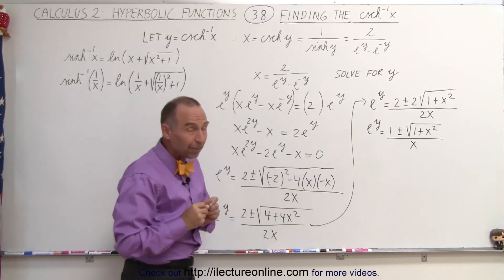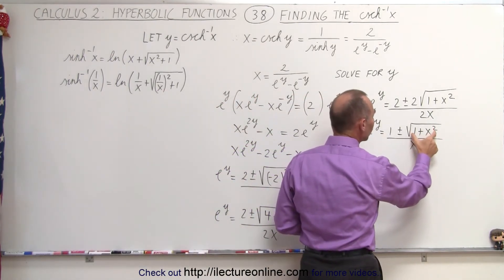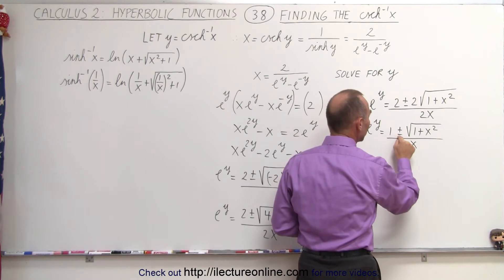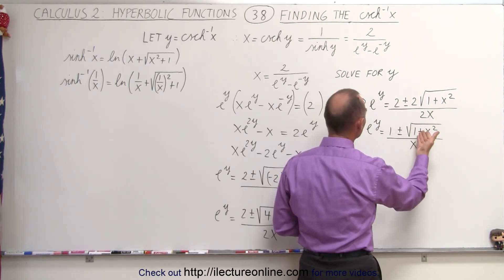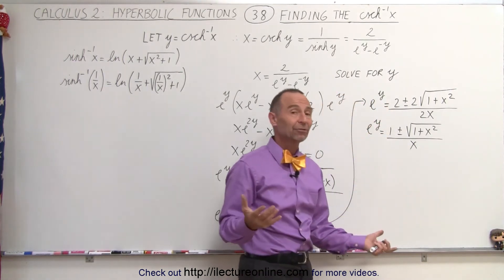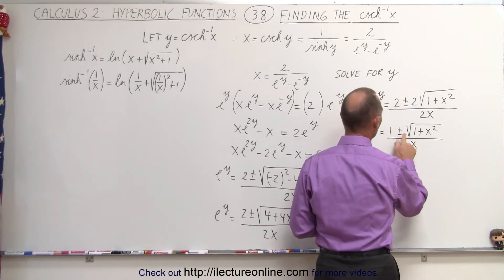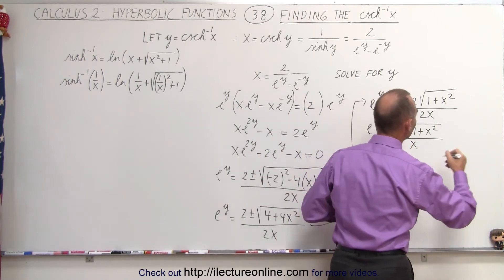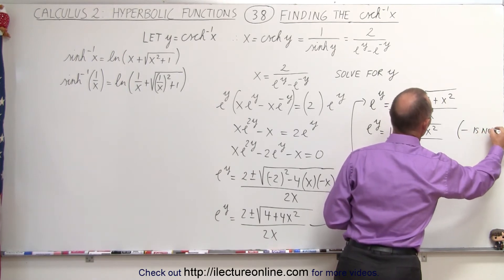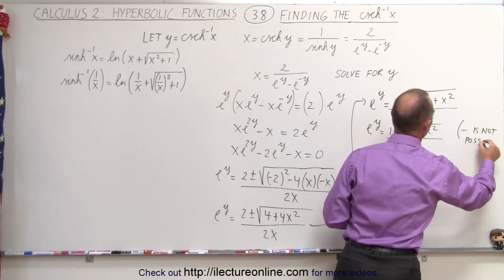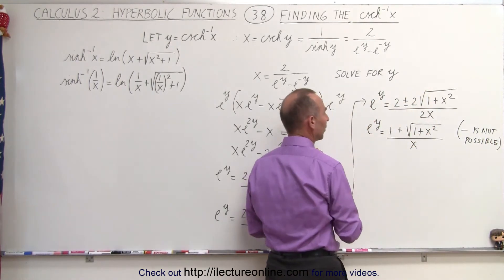Now we have a plus and a minus there, but notice the quantity 1 plus x squared is always going to be larger than 1, and if we subtract it from 1 we end up with a negative number. Since e to the y can never be a negative number, the negative solution is not possible, so we're going to get rid of the negative.